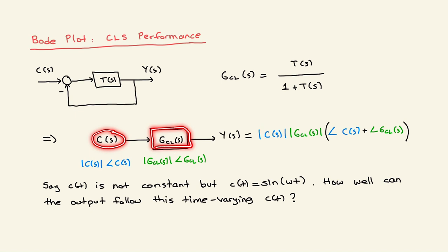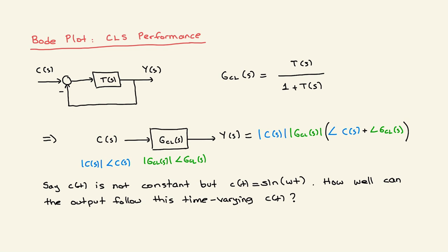The command enters the closed-loop system and the output goes out. Say the command is not constant — we can track constant signals either with a feedforward gain or a PI-type compensator. But let's say we are interested in tracking a time-varying signal with frequency omega radians per second. This command can be a combination of sines and cosines, or a time-varying function approximated by sines and cosines. For this discussion, I will assume the command is sine(ωt), so the signal has frequency omega radians per second.